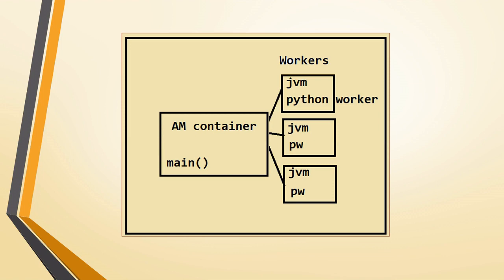But if you have Python-specific libraries or Python UDFs — user-defined functions — then the normal Java wrapper or Python wrapper will not be able to convert that into code understandable by the Spark core. In that case, the AM container will also create Python workers, and that code will be executed in the Python workers. For normal Spark or PySpark applications without Python-specific code, everything is executed within the available JVMs.